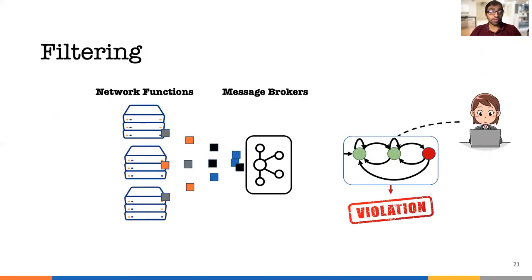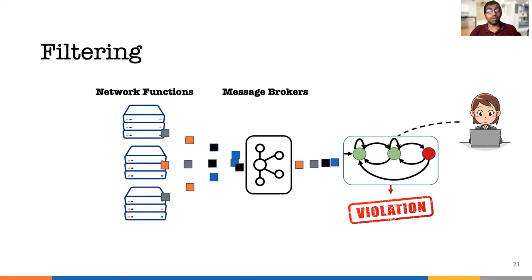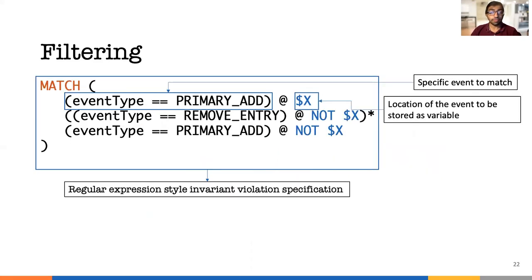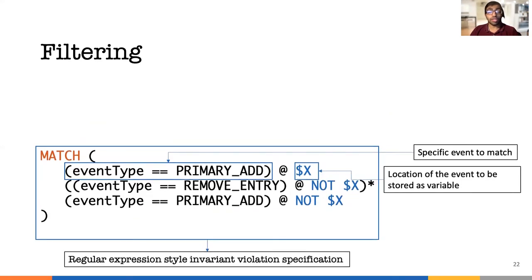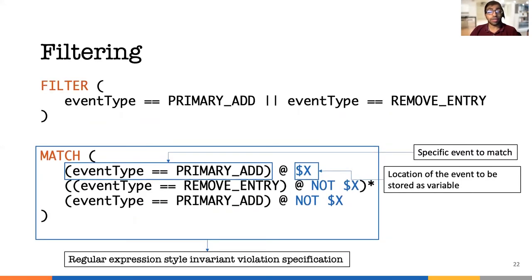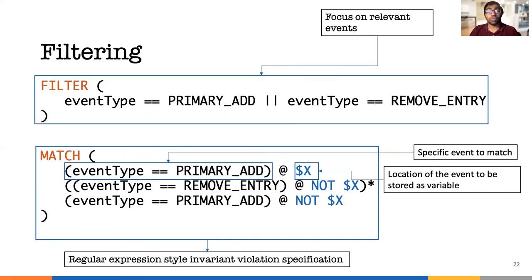Let's start with filtering. With filtering, we can remove the unwanted events being sent to the verifier. In the example here, we remove all messages of orange color. To specify what kind of messages to filter, we add the filter keyword in our specification language. Azure NatGateway has many types of events, but this invariant only needs two types. The filter restricts to allow only these two types of events.